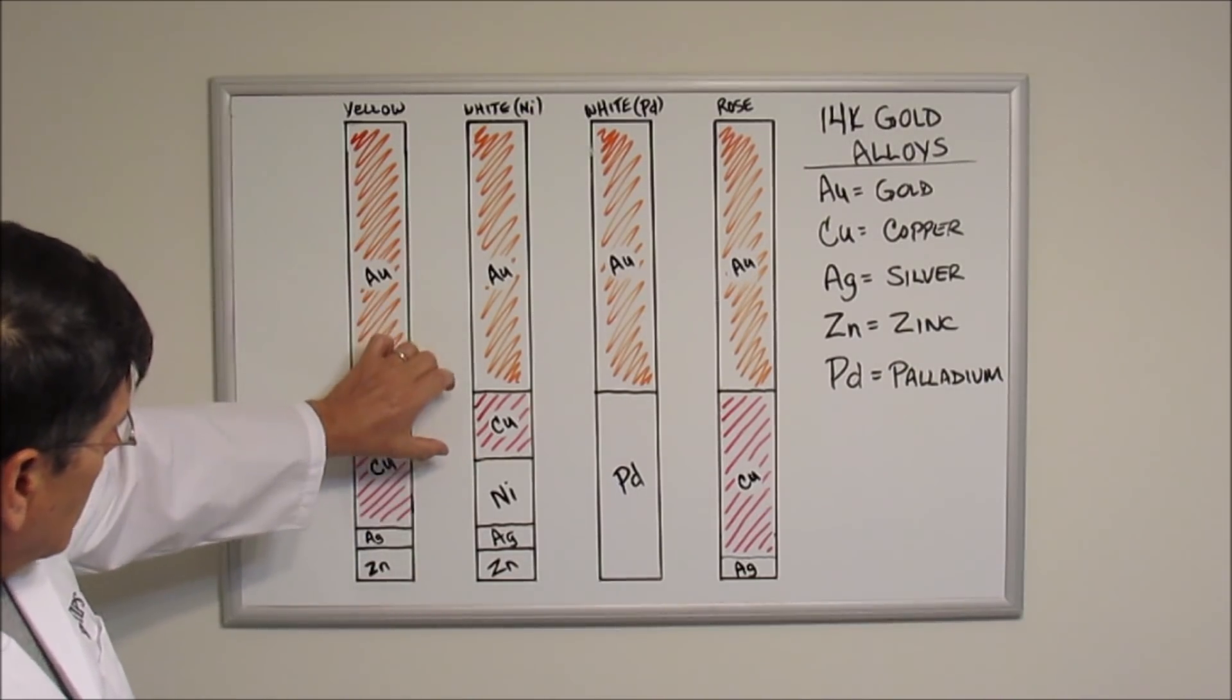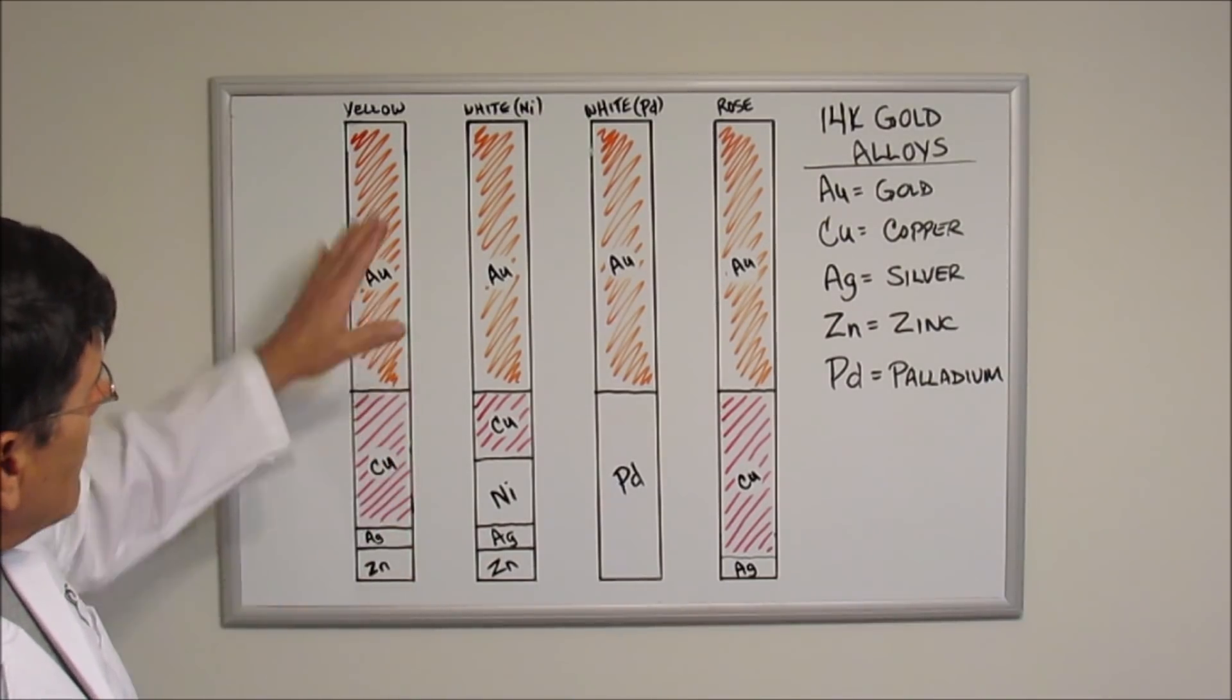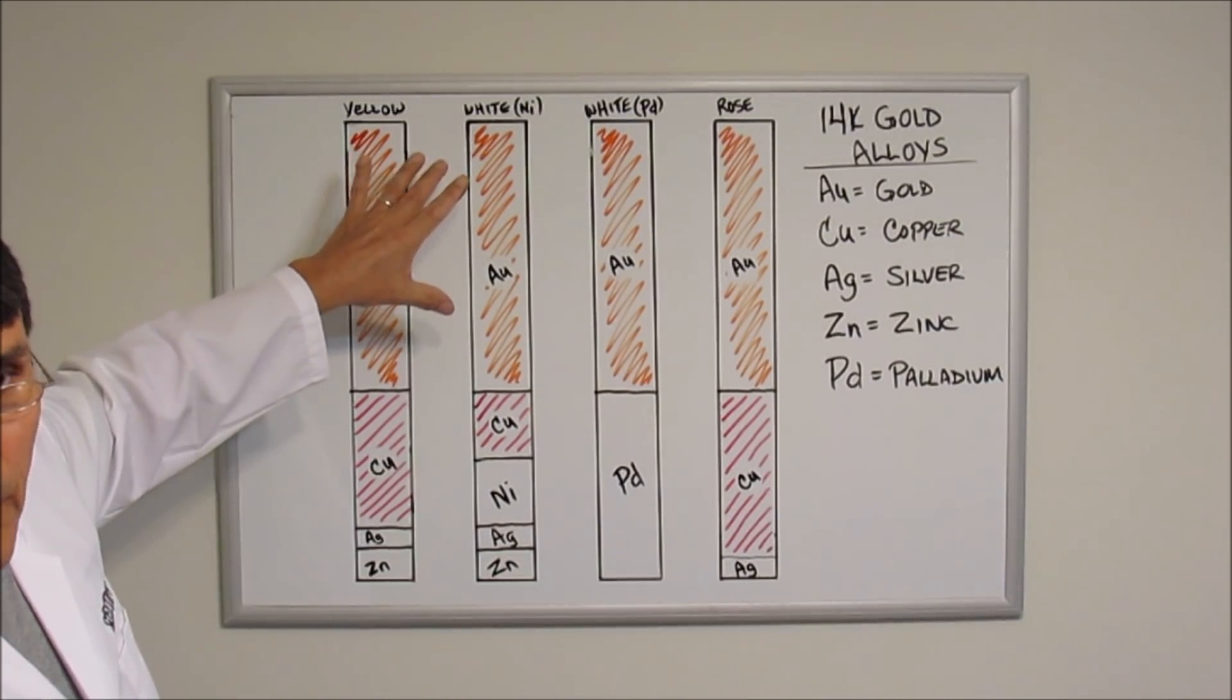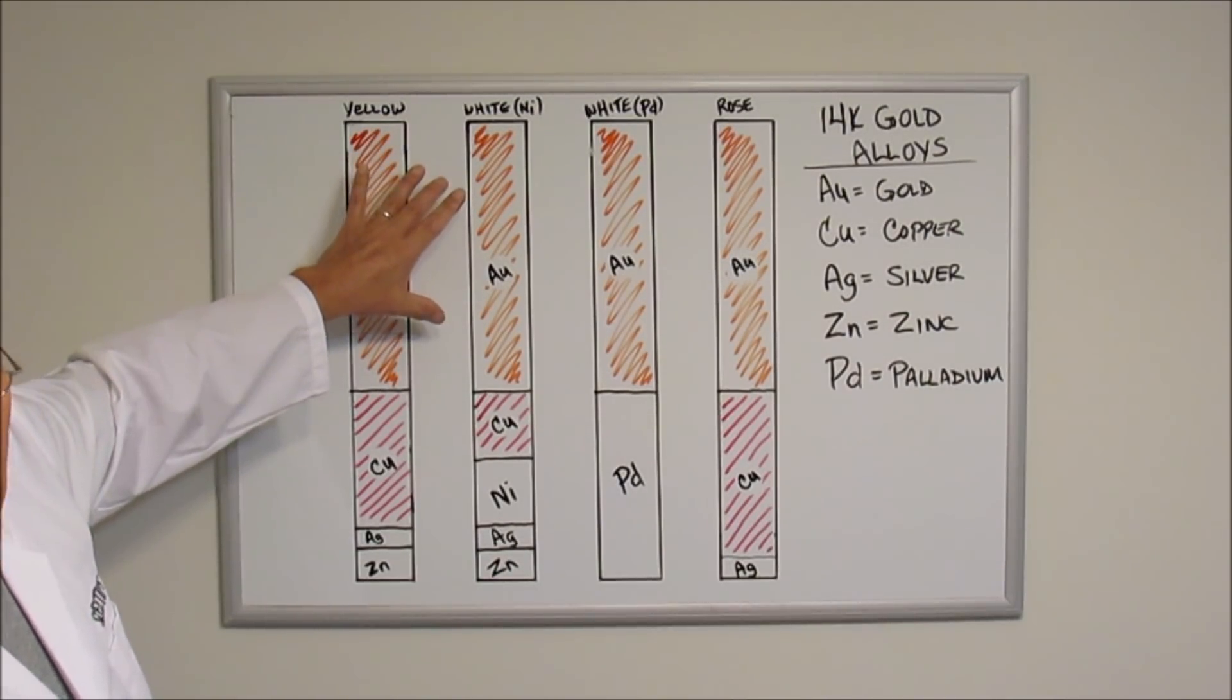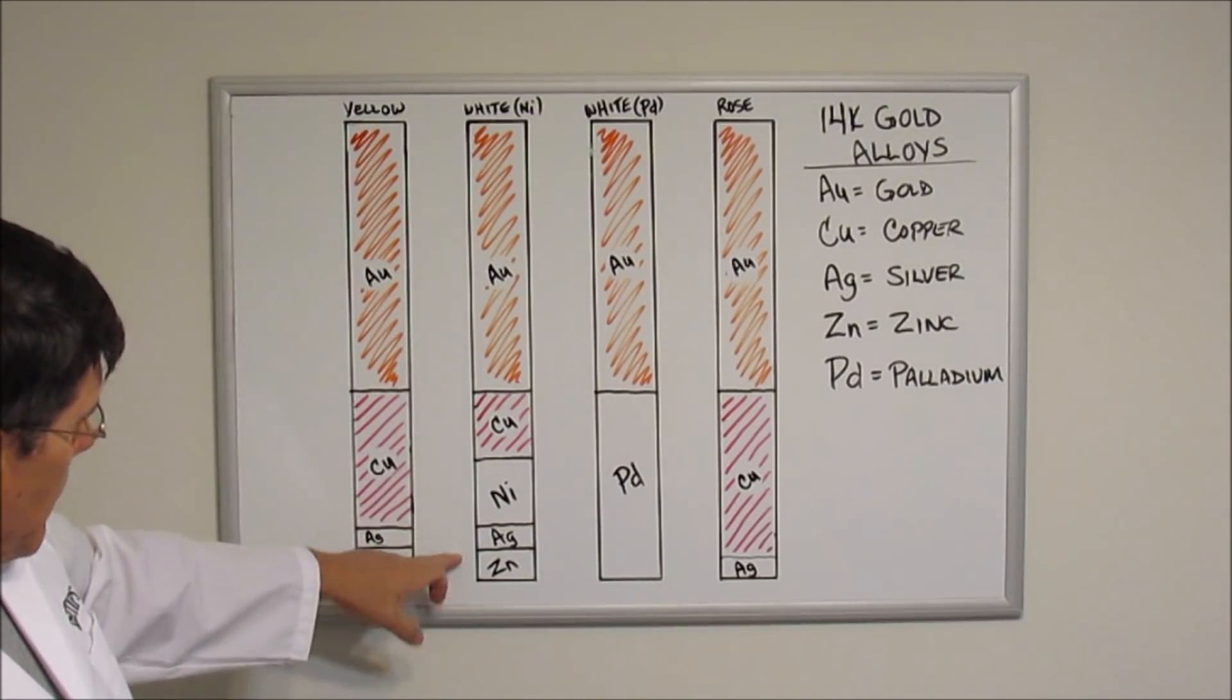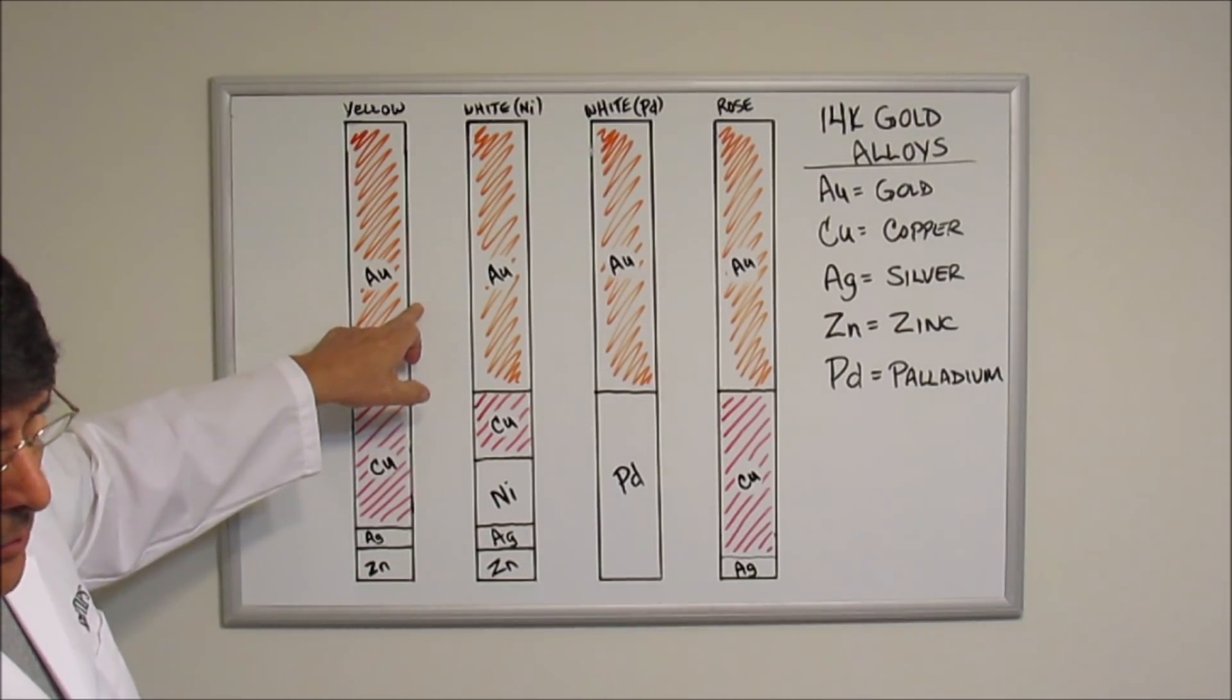As you can see, there's less copper and more white metals, and what that does is that tends to tint the alloy a white color. It's still got 59 grams of pure gold in it, just like the yellow does, but since we've added more white metals as opposed to the yellow gold, this alloy will take on a white appearance.